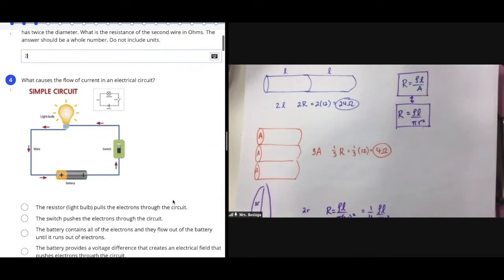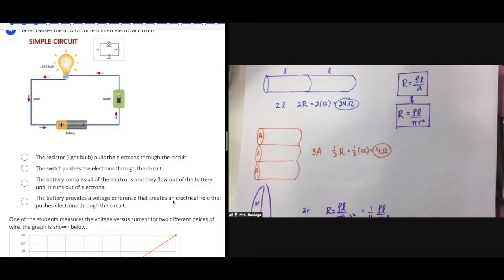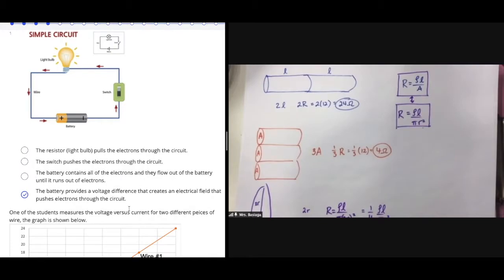Number four: what causes the flow of current in an electrical circuit? The resistors don't pull electrons through, and the switch doesn't push them. From the Ohm's Law lab, whenever you attach a battery, that provides a voltage — with no voltage, you get no current. The potential difference puts a positive potential near the positive terminal and a negative potential near the negative terminal, creating an electric field. Electrons at the negative terminal repel each other and flow through the circuit.